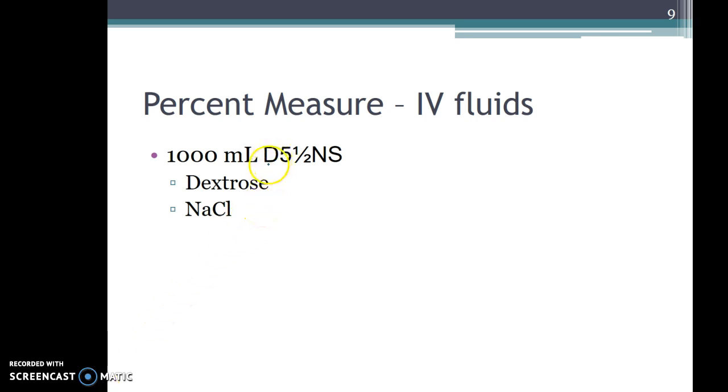So there's actually two things going on. There's D5 and then there's half NS. So D5 literally means that we have 5% dextrose.